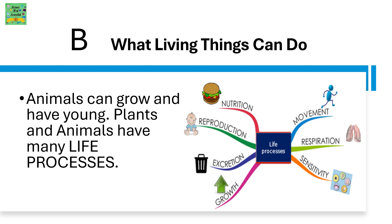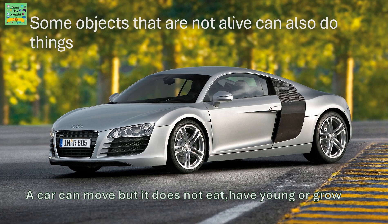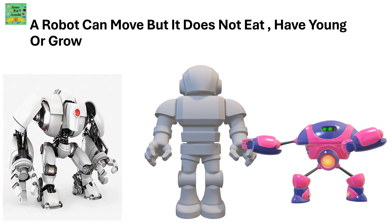What can living things do? Animals can grow and have young ones. Plants and animals have many life processes. Some objects that are not alive can also do things — for example, a car can move, but it does not eat, have young ones, or grow. A robot can move, but it does not eat, have young, or grow.